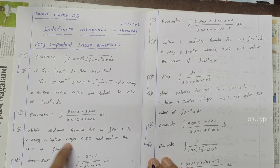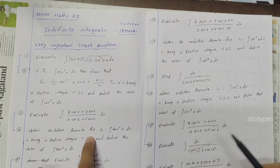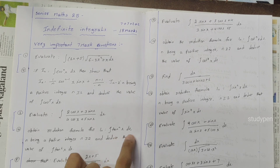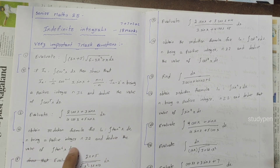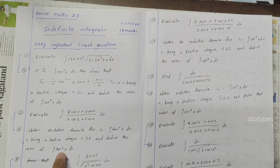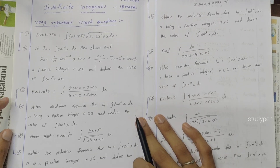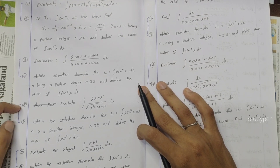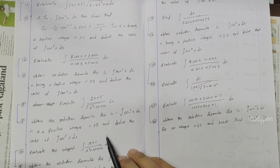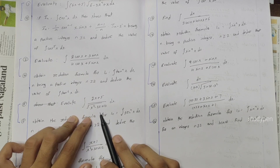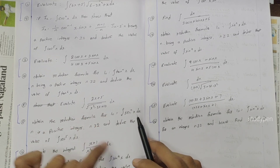Next one: obtain reduction formula for I_n = integral tan^n x dx, where n is a positive integer, n greater than or equal to 2, and reduce the value of integral tan^6 x dx. Next: evaluate integral (2x + 5) / sqrt(x² - 2x + 10) dx.